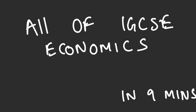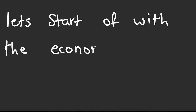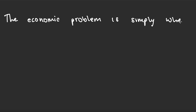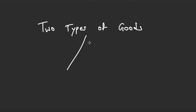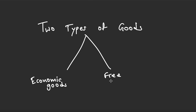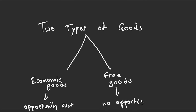All of IGCSE economics in nine minutes. Let's start off with the economic problem — this is simply when we have fewer resources and unlimited wants. We need to know two types of goods: economic goods and free goods. Economic goods have an opportunity cost, while free goods do not. An example of a free good is sunlight.